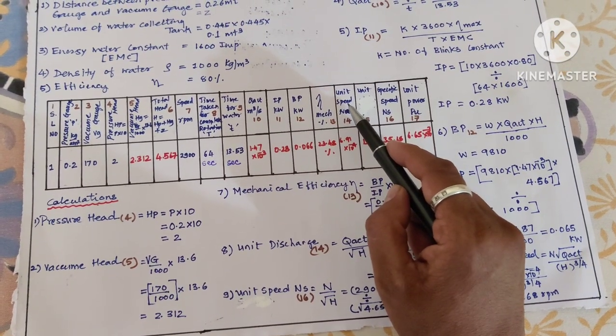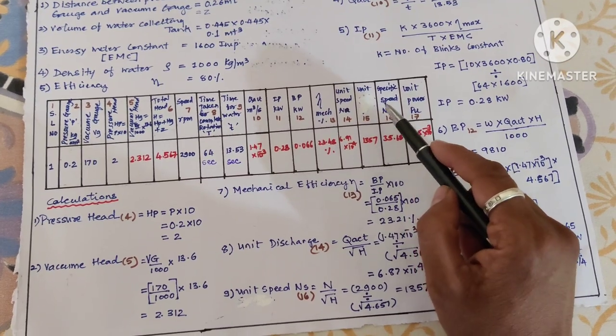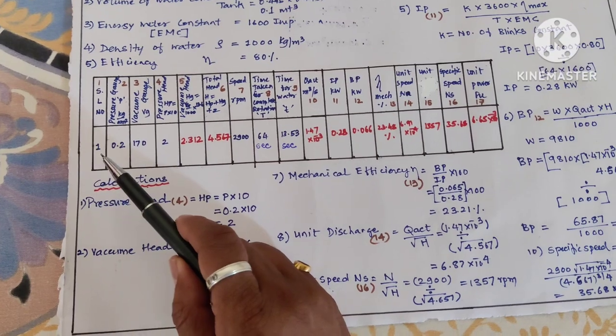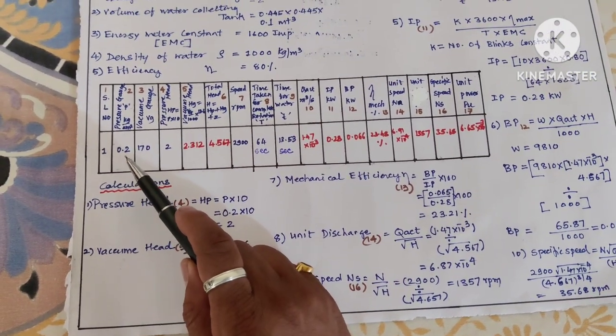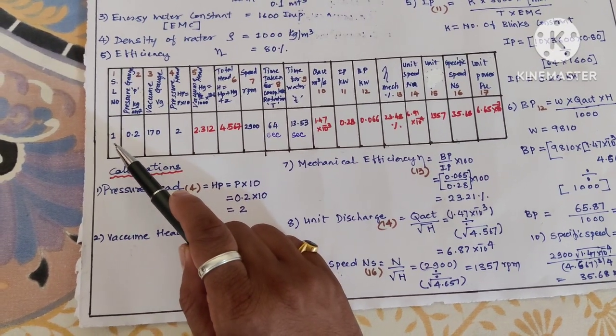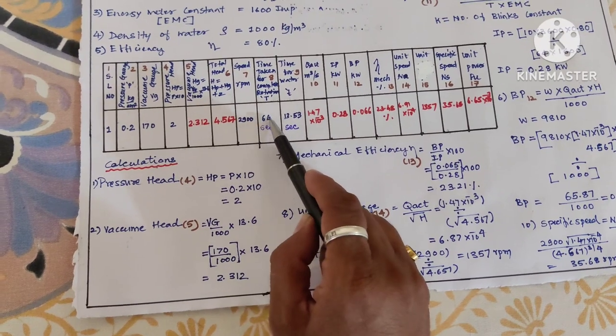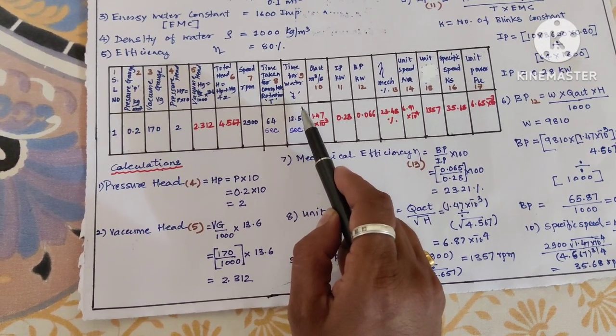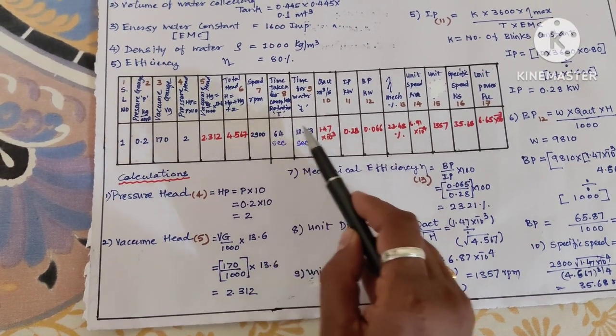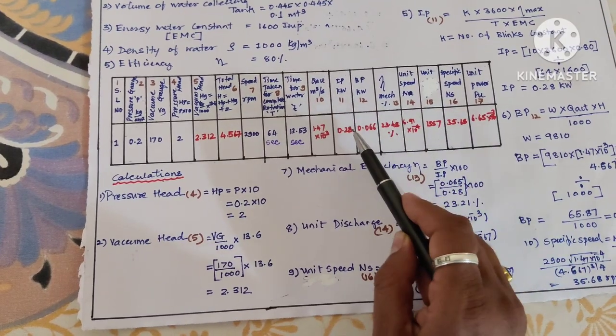Unit speed, specific speed, and unit power. For calculation purposes I have taken the readings. If you observe, the readings written in blue color we have to take from the centrifugal pump, and the readings written in red color are results of the calculation.